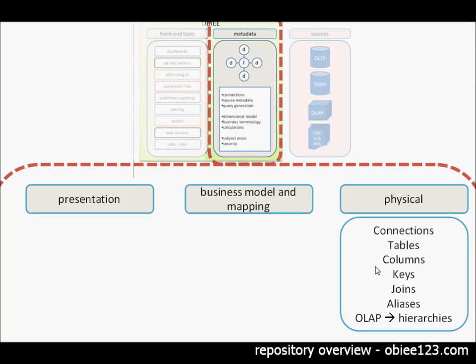The physical layer contains all the relevant information about the physical sources. So connections, if applicable tables, columns, keys, joins, and aliases. These are typically relational database terms. In case of a file it may also be the location of a file. And in case of an OLAP cube it may also contain hierarchies because these hierarchies are already physically stored within an OLAP cube. So this layer describes the physical sources and how OBIEE can get access to them.